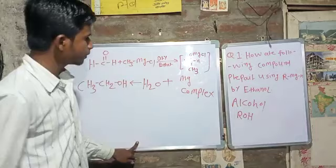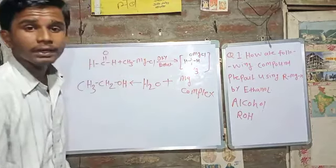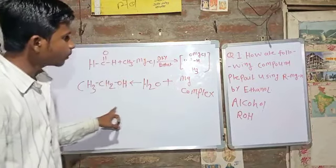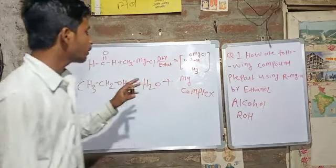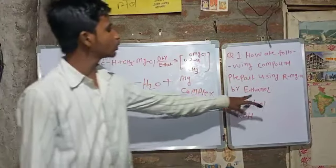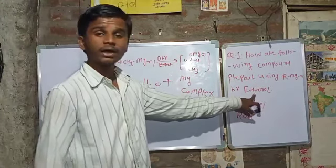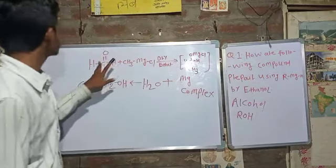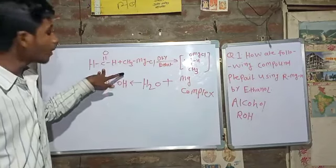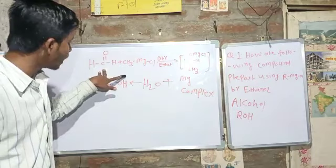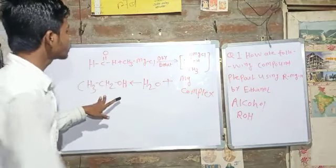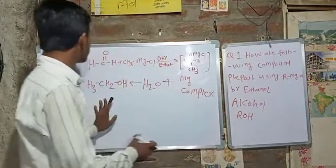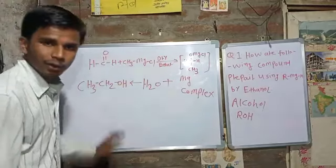We have seen primary alcohol — this is primary alcohol. In the second case, we have to use the Grignard reagent plus formaldehyde to give alcohol. Grignard reagent plus formaldehyde gives rise to primary alcohol. Ethanol is primary alcohol.